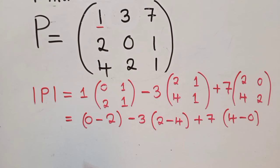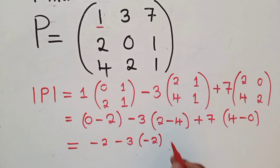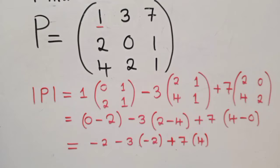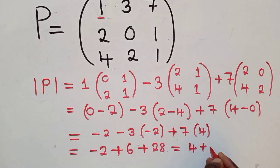So we now simplify here. When we simplify, we are getting negative 2, minus 3, open bracket, here it will be negative 2. Because when we say 2 minus 4, it's minus 2. Then we say plus 7, 4 right here. So now from this stage, this would definitely give us 6. Because negative and negative will give us positive 3 by 2, it's 6. Then plus 28. 7 times 4 is 28, which is equal to 4 plus 28. Because negative 2 plus 6 is positive 4. So when we add these, we are getting 32.